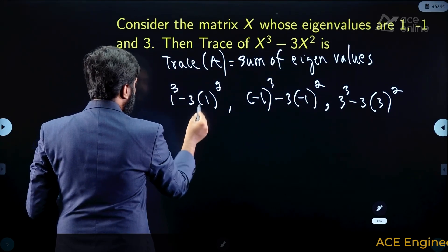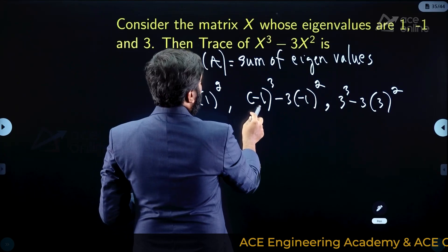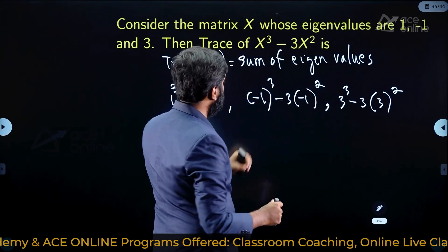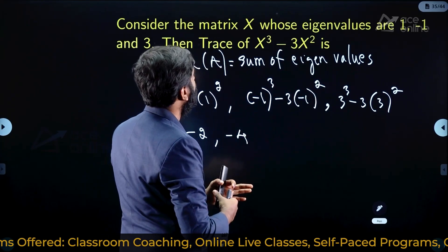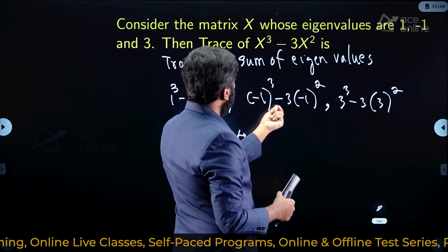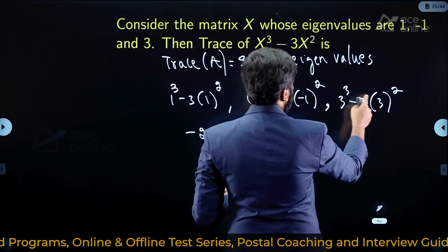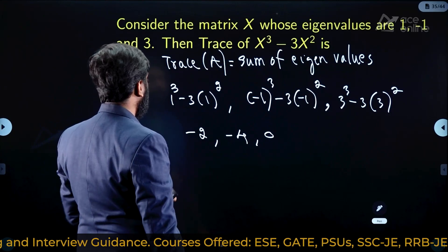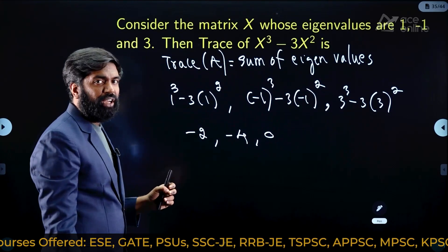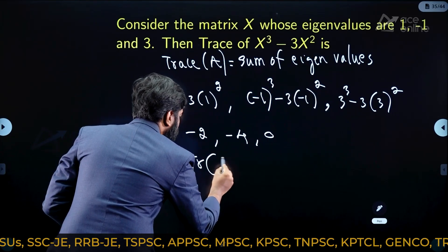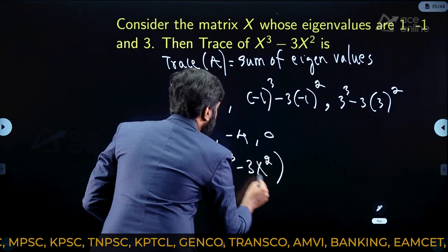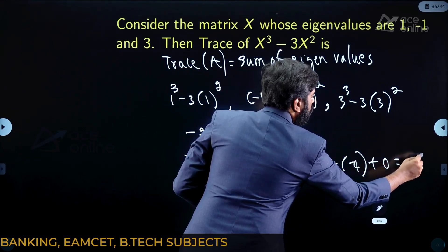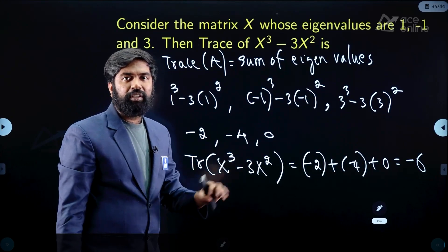Calculating: 1 - 3 = -2; (-1) - 3(1) = -1 - 3 = -4; 27 - 3(9) = 27 - 27 = 0. So the eigenvalues of X³ - 3X² are -2, -4, and 0. The trace is the sum: -2 + (-4) + 0 = -6.